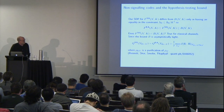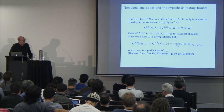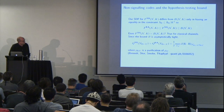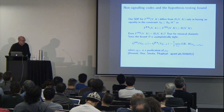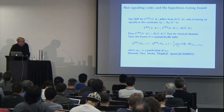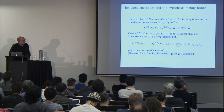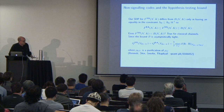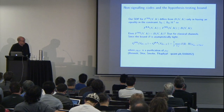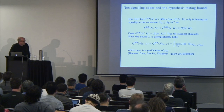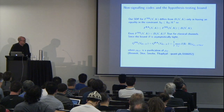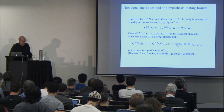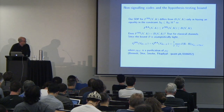Calling that bound B — an upper bound on the fidelity of entanglement-assisted codes — the only difference between that SDP and the one for the exact performance of non-signaling codes is that the latter has an equality instead of an inequality. So the non-signaling SDP gives a tighter bound. Since bound B was shown to be asymptotically tight — recovering the beautiful formula for the entanglement-assisted capacity due to Bennett, Smolin, and Thapliyal — this shows that the quantum capacity for non-signaling codes is actually the same as for entanglement-assisted codes.